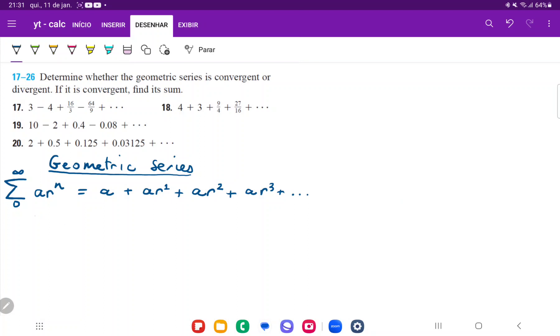So for it to be convergent, it therefore means that the limit as n approaches infinity of R^n is equal to zero, because we can see that for each term, A doesn't change. However, R to the power of n does change, so that's the thing that needs to go to zero.